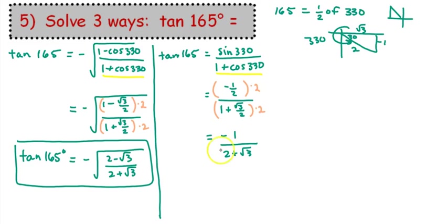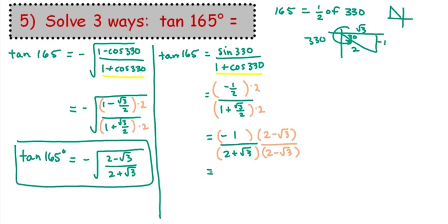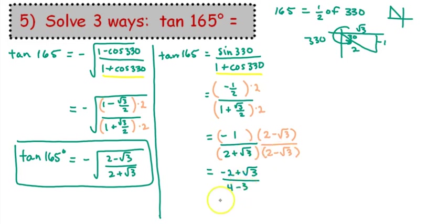This one will not be too difficult to rationalize, so let's go ahead and complete that process. Multiply by 2 minus square root 3 over itself. Distributing the negative 1 on the top, we have negative 2 plus square root 3. And on the bottom, when we FOIL, we get 2 times 2 equals 4, the inside and outside terms cancel, and square root 3 times negative square root 3 gives minus 3 — so 4 minus 3 is just 1. So the result is negative 2 plus square root 3.